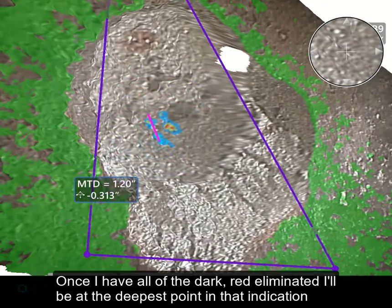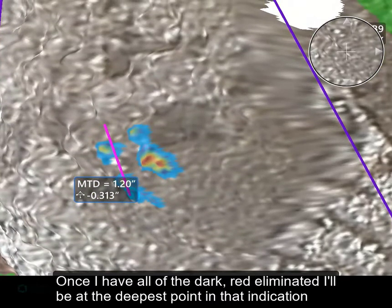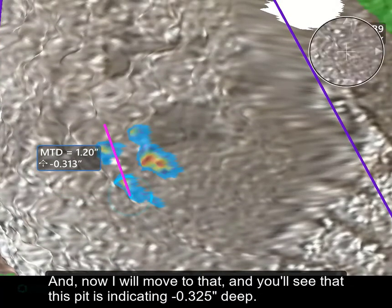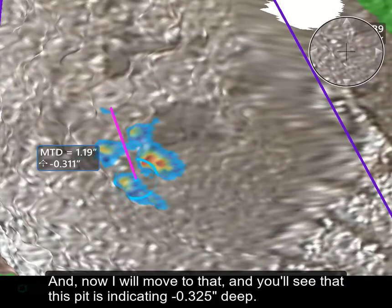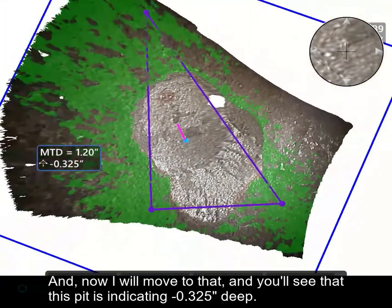Once I have all of the dark red eliminated, I'll be at the deepest point in that indication, and now I will move to that, and you'll see that this pit is indicating 325 thousandths of an inch deep.